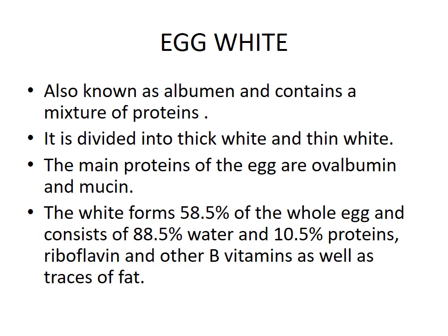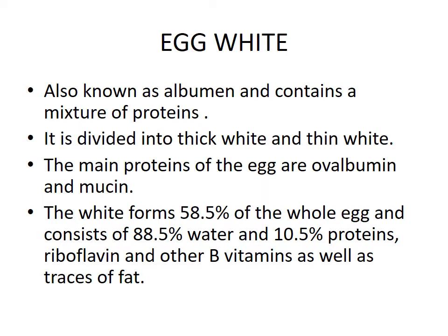Egg white, also known as albumin, contains a mixture of proteins divided into thick white and thin white. The main proteins of the egg are ovalbumin and mucin. The white forms 58.5 percent of the whole egg and consists of 88.5 percent water and 10.5 percent proteins, riboflavin and other B vitamins, as well as traces of fat.